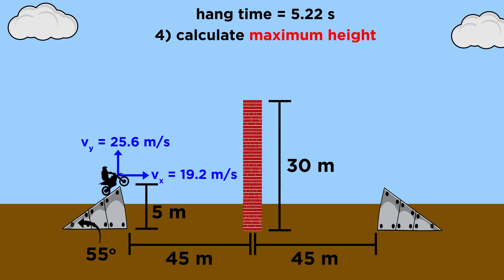But we still have to make sure Max will clear the wall. What is the maximum height of his trajectory? Well, the maximum height will occur at precisely half the hang time, since it will take the same amount of time to go up as it does to come down. That's two point six one seconds.